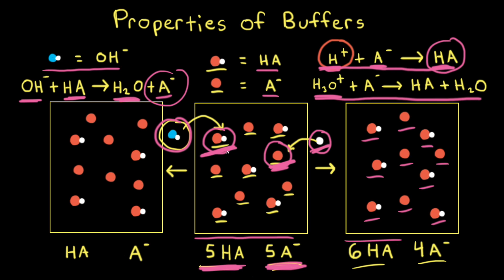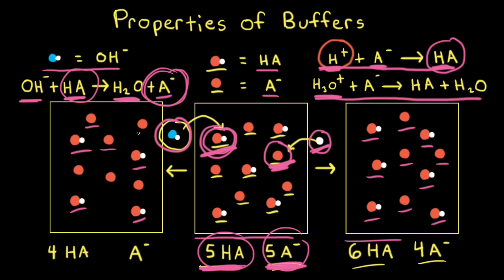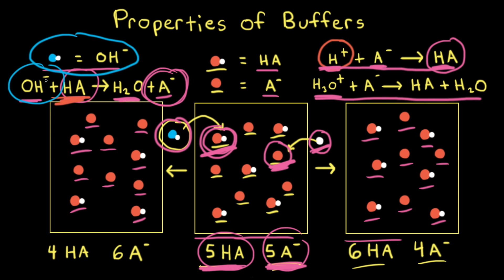Since we're using up one of the HA's, we're going to go from five HA's down to four HA's. And when this HA reacts, it's going to turn into an A-minus, so we're going to go from five A-minuses up to six. So we write in six A-minuses. If there was no buffer present and we were just adding hydroxide anions to water, the pH would change dramatically. However, with a buffer present, since there is a weak acid HA to neutralize the added hydroxide anions, the buffer solution resists a change to the pH.